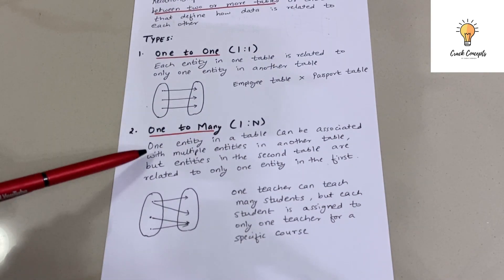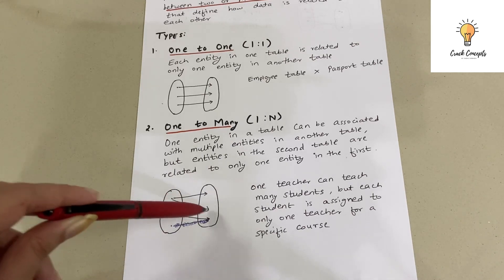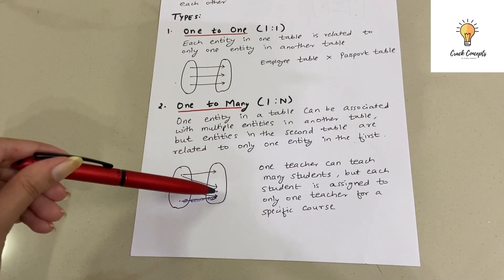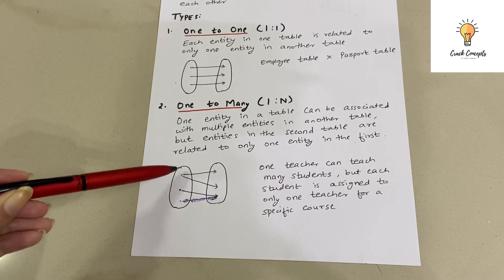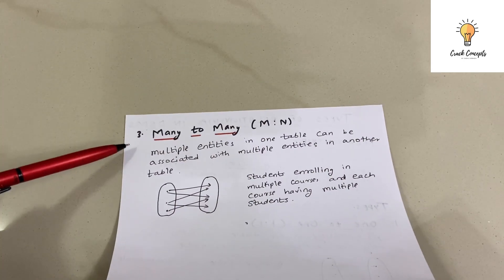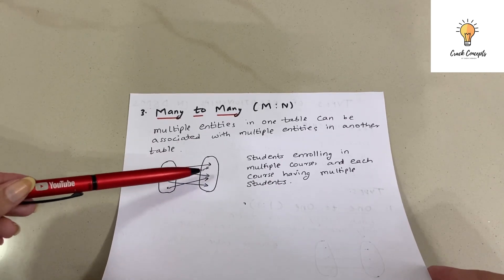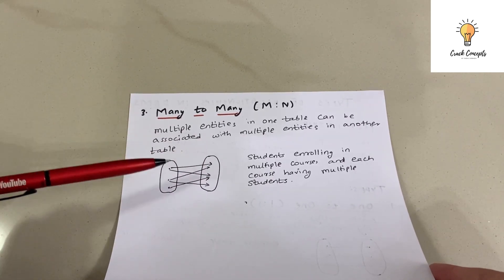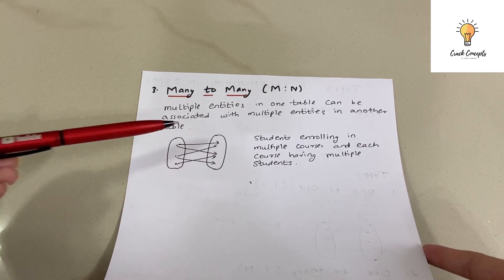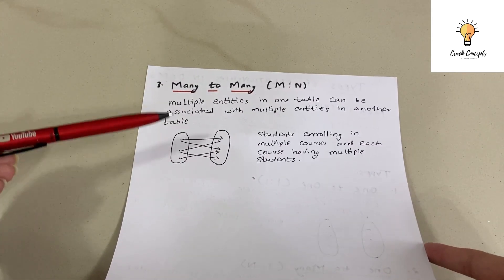The second type is one-to-many. For example, one teacher can teach many students, but each student will have only one teacher for a particular course. The third type is many-to-many, where multiple entities in one table can be associated with multiple entities in the other table. For example, different students can enroll in multiple courses, and each course can have multiple students.